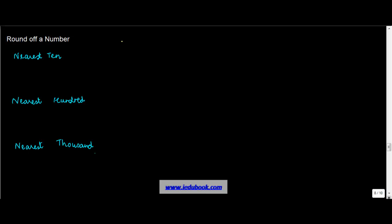Let us first see rounding off to the nearest 10. Let's say you have three numbers: 53, 55, and 59. To round them off to the nearest 10, the first step is you look at the units digit. In these cases it is 3, 5, and 9.